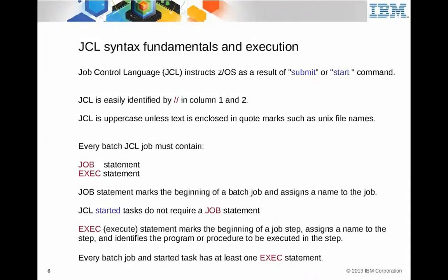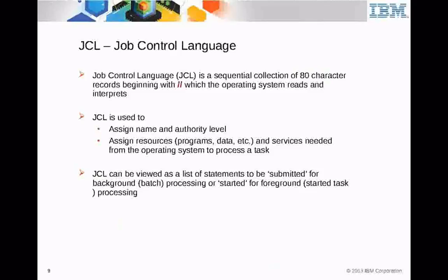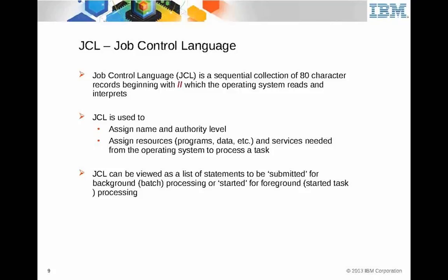The job statement basically identifies the name of the thing that's going to be executing in the background. The execute statement says what program do you expect to execute. Every batch job and started task has at least one execute. Each JCL statement is 80 characters in length — it's mandatory to be 80 characters.